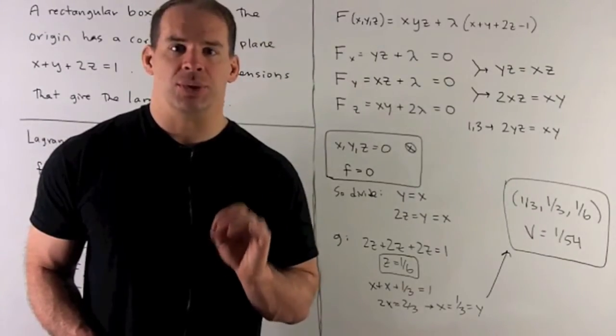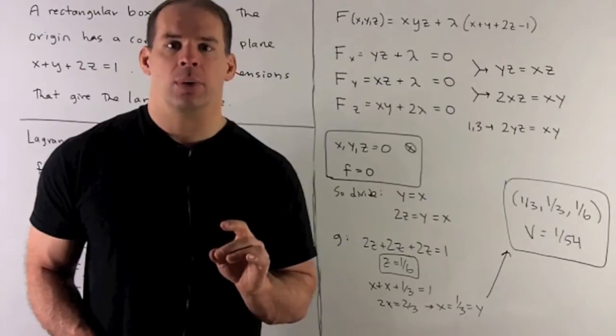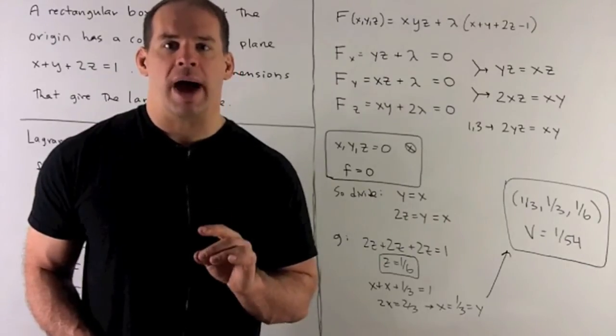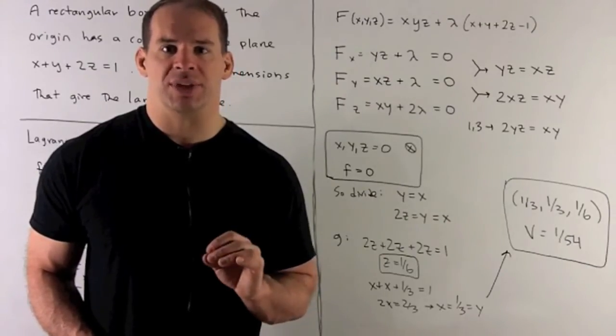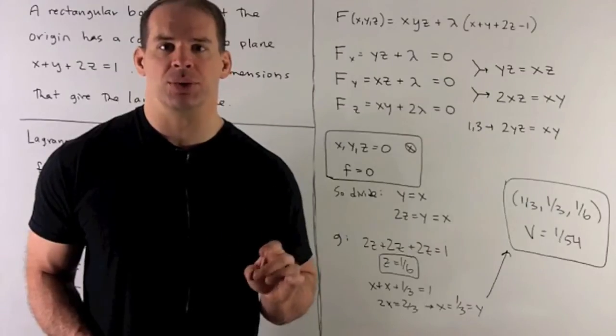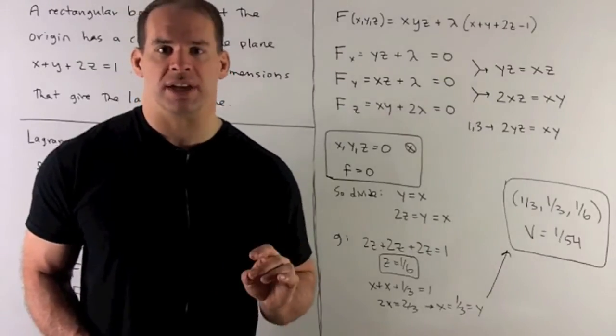Now, we can substitute into our constraint. So I'll take x and y, put in 2z, and see what comes out. So we have 2z plus 2z plus 2z equals 1, or z equals 1 sixth.